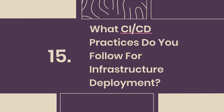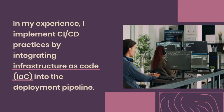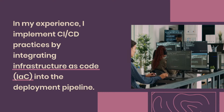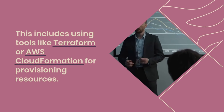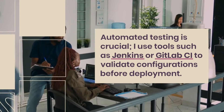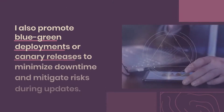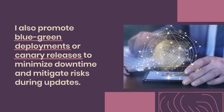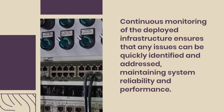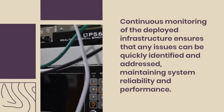Question 15: What CI/CD practices do you follow for infrastructure deployment? I implement CI/CD practices by integrating Infrastructure as Code (IAC) into the deployment pipeline. This includes using tools like Terraform or AWS CloudFormation for provisioning resources. Automated testing is crucial — I use tools such as Jenkins or GitLab CI to validate configurations before deployment. I also promote blue-green deployments or canary releases to minimize downtime and mitigate risks during updates. Continuous monitoring of the deployed infrastructure ensures that any issues can be quickly identified and addressed, maintaining system reliability and performance.